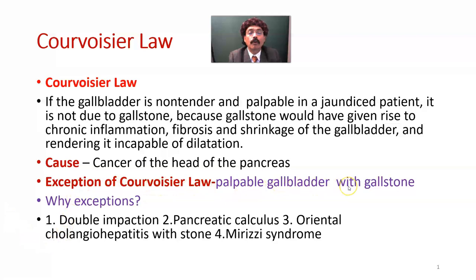The exception of Courvoisier's Law is a palpable gallbladder with gallstone. Why these exceptions? There will be double obstruction. One stone may block the common bile duct, and another stone may impact the cystic duct. So there may be mucocele formation in the gallbladder, and there will be obstruction in the flow of bile through the common bile duct, causing jaundice. Due to the mucocele, the large gallbladder will be palpable.